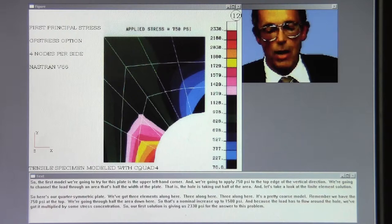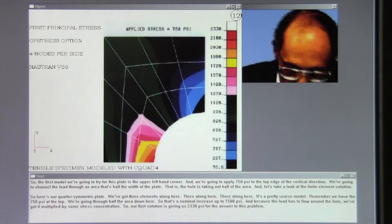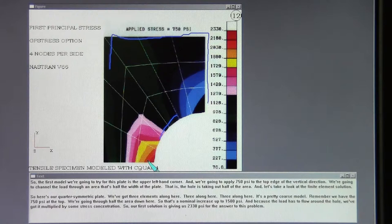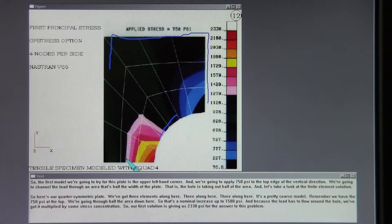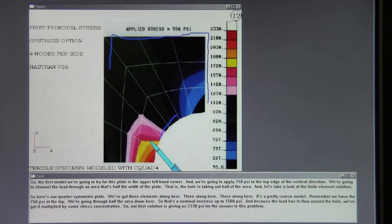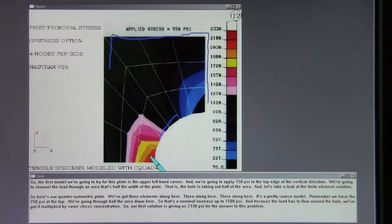So the first model we're going to try for this plate is that we're at the upper left-hand corner. And we're going to apply 750 psi to the top edge in the vertical direction. We're going to channel the load through an area that's half the width of the plate. That is, the hole is taking out half of the area. And let's take a look at the finite element solution. So here's our quarter-symmetric plate. We've got three elements along here, three along here, three along here. It's a pretty coarse model. Remember, we have the 750 psi at the top. We're going through half the area down here, so that's a nominal increase up to 1500 psi. And because the load has to flow around the hole, we've got it multiplied by some stress concentration. So our first solution is giving us 2330 psi for the answer to this problem.